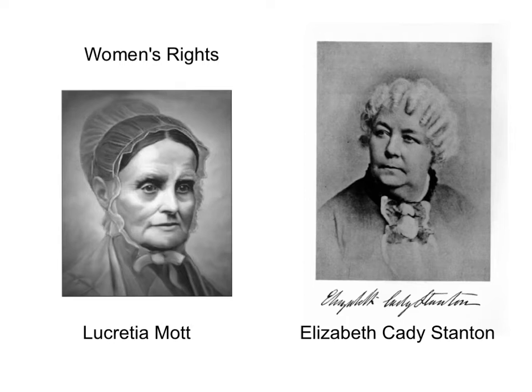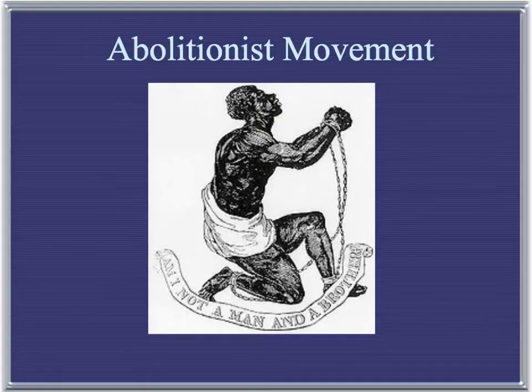In their Declaration of Sentiments, written at Seneca Falls, those who had gathered rejected the cult of domesticity. They demanded that women be given the right to vote, and that married women be able to control their property just as their husbands do. This women's movement really gained more strength throughout the 1800s.